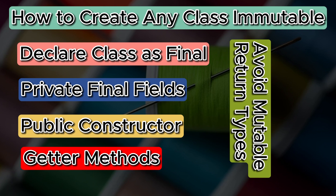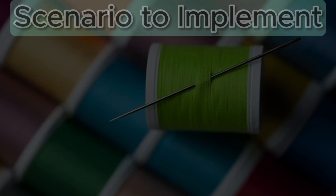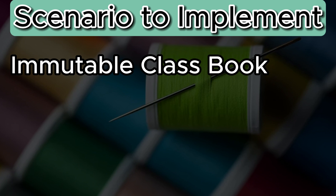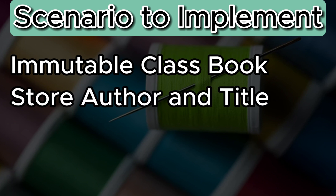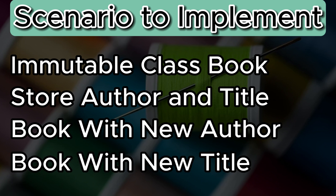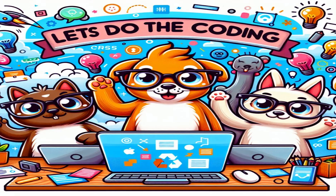Now let's implement a use case to understand immutability in detail. The scenario is: we have a requirement to create a class to store the details of a book — author and title. We need two additional functionalities: using an existing book object, create a new book by updating only the author (keeping the title same), and create a new book by updating only the title (keeping the author same). Let's now code the solution for this scenario and verify the details.